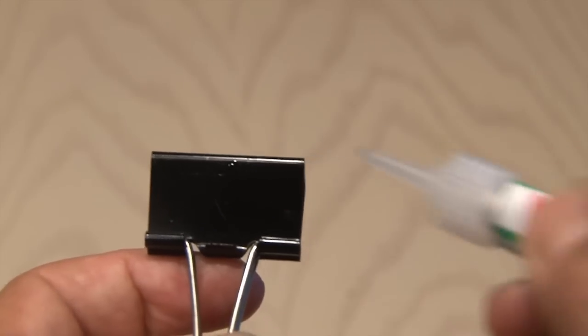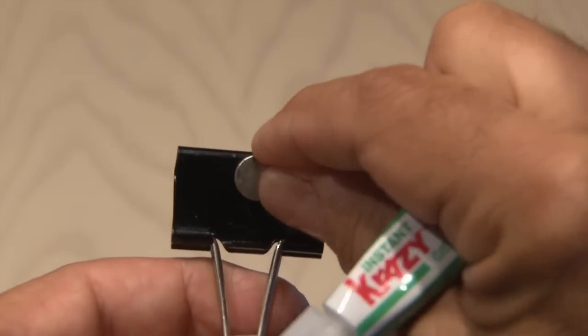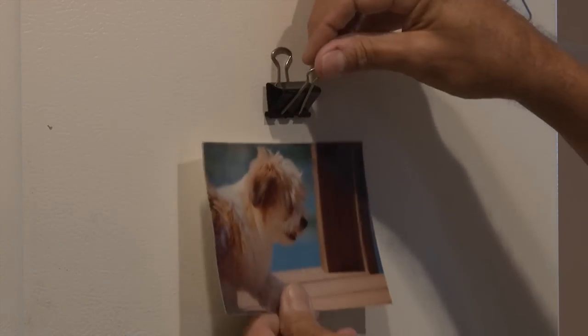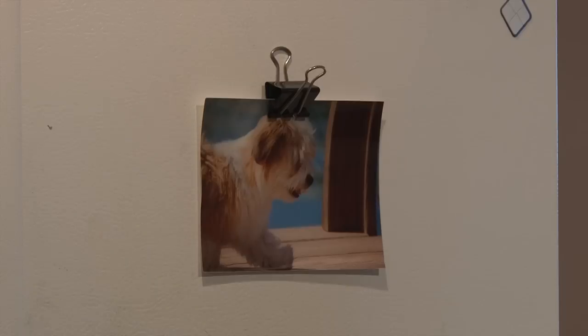Take a binder clip and a small magnet and a little super glue. Glue the magnet in place on the binder clip. Now you've got a fridge photo mount. You can hang pictures of your puppy.